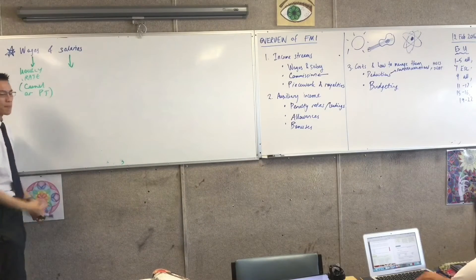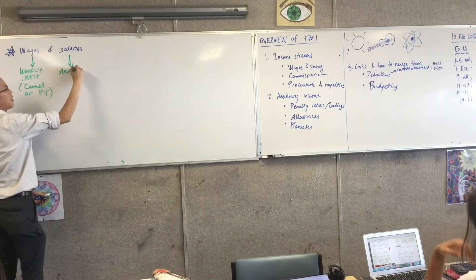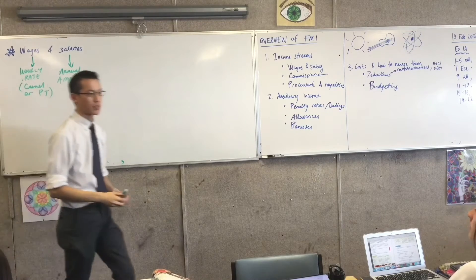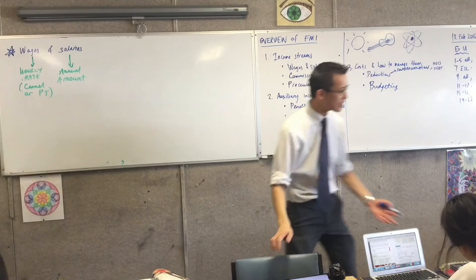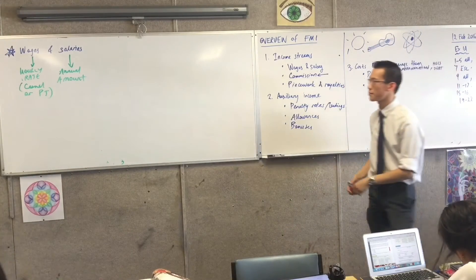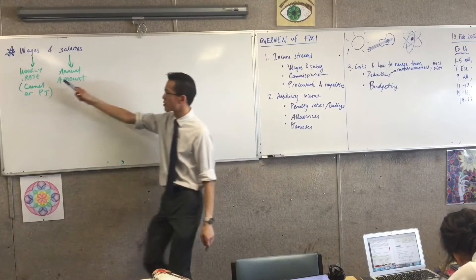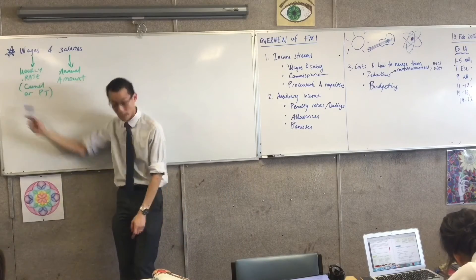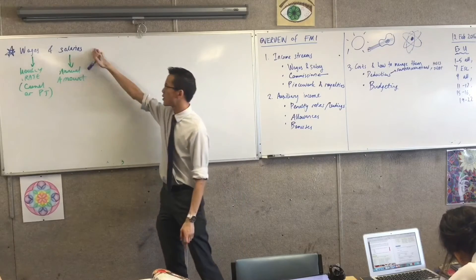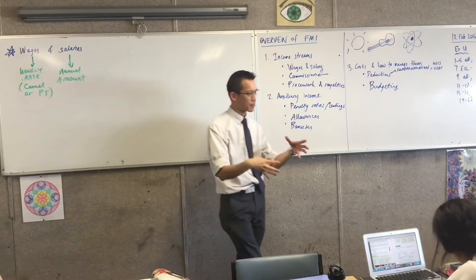Salaries are pretty much an annual amount. So someone would say, oh, I've earned this, and the figure they're referring to me is how much in a whole year does it take. So, wages are an hourly rate. They're generally for casual part-time staff, whereas salaries are an annual amount.